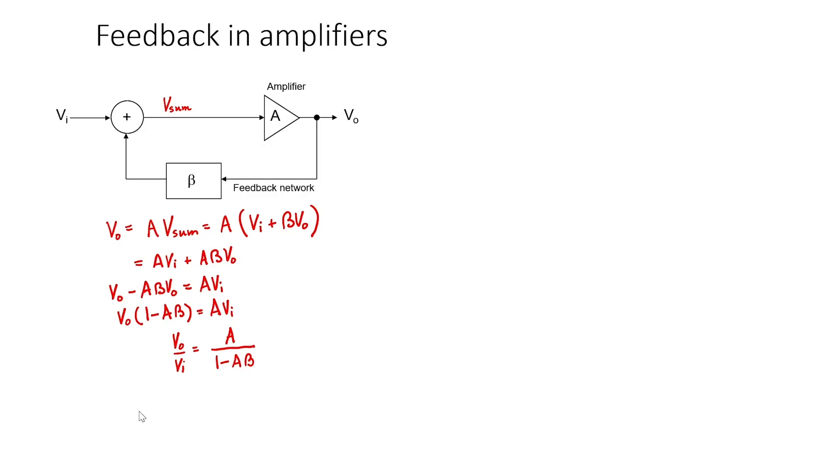This means that if the negative sign is assumed, the term in the denominator would automatically be positive. So in some textbooks, you might see 1 plus AB beta in the denominator. This indicates that the feedback is already assumed to be negative.